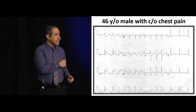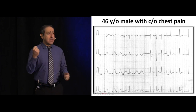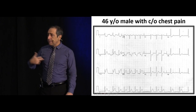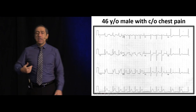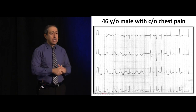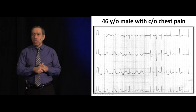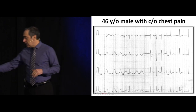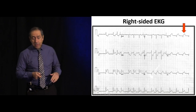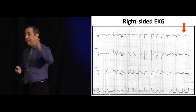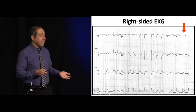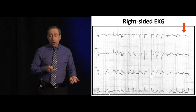Take V4 from the right side — keep the original sticker on, take a new sticker and put it on the same height on the right side, fifth intercostal space mid-clavicular line. Take the clip and put it on the other side, then get your EKG. One millimeter ST elevation with upright T wave in that lead really tells you there is right ventricular involvement. You can also change V5 and V6, but all we really care about is V4.